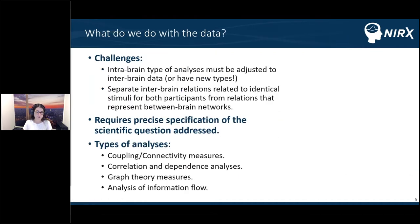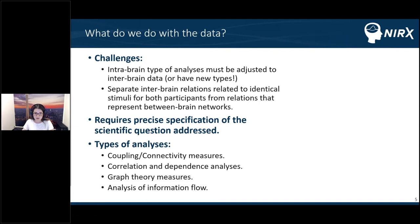The analysis and interpretation of hyperscanning data is a challenging task. First, intra-brain analysis has to be adjusted to inter-brain data, or new types of analysis have to be developed. Secondly, it is challenging to separate intra-brain relations related to identical stimuli presented to both participants from relations that represent between-brain networks. For the case of correlation, this involves calculation of partial or semi-partial correlation coefficients, but similar adjustments might need to be done to other measurements. Overall, this is a demanding topic requiring precise specification of the scientific question addressed.